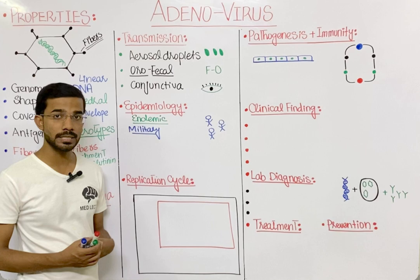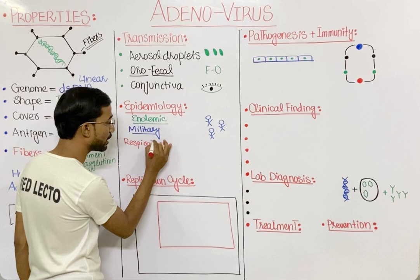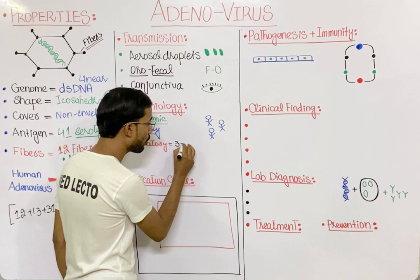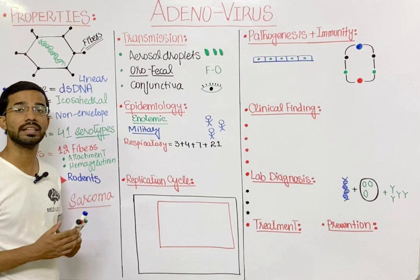Different serotypes of adenovirus cause different diseases. The first disease is respiratory disease. Serotypes 3, 4, 7, and 21 of adenovirus cause upper and lower respiratory tract infections.